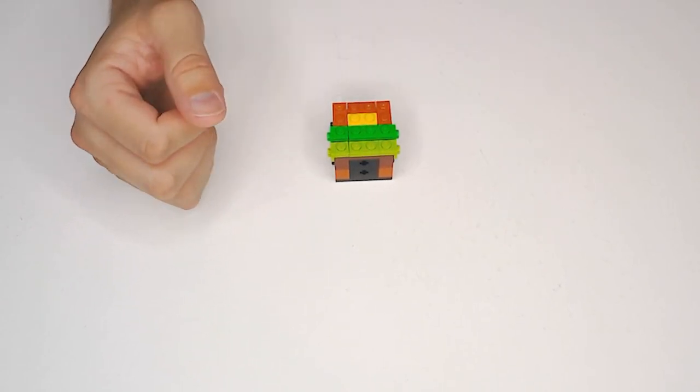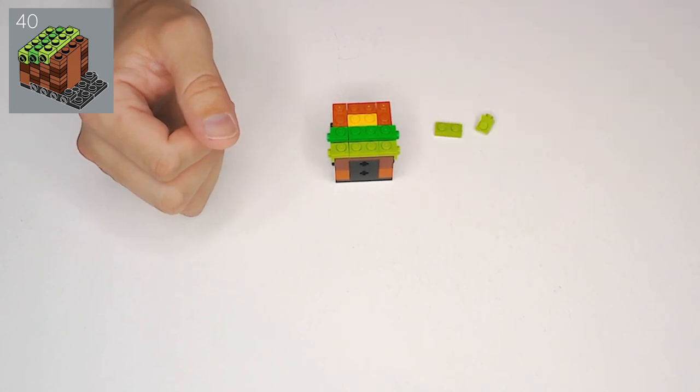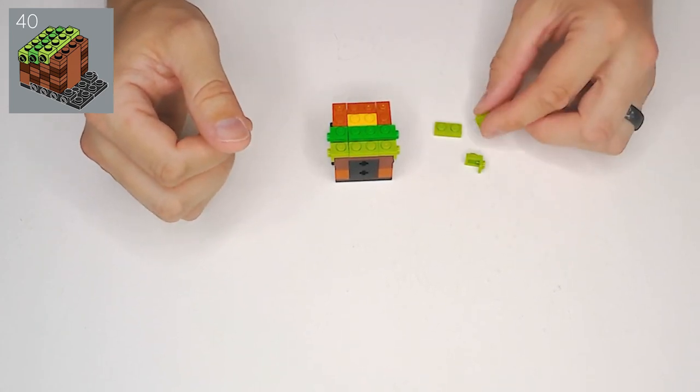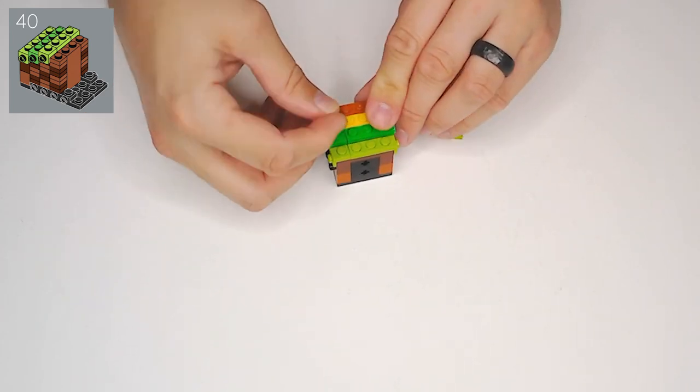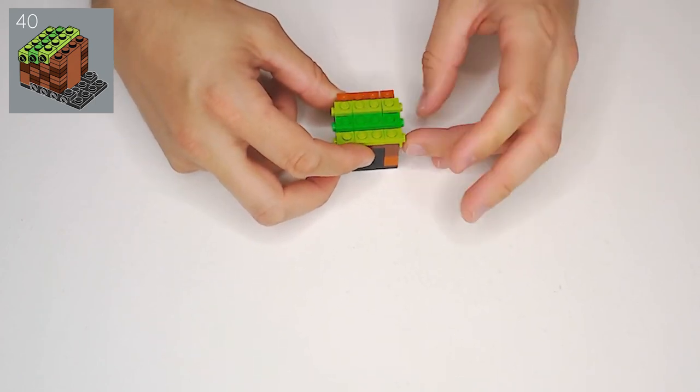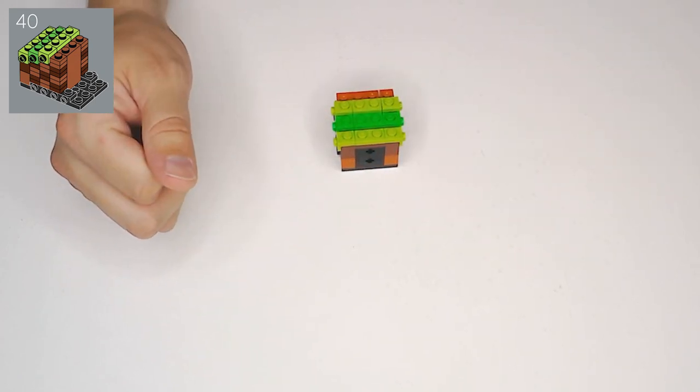We're going to build another little green grass piece. So, on a 1x2 plate, we're going to do these hanging tabs on both edges. We're going to cover the yellow.